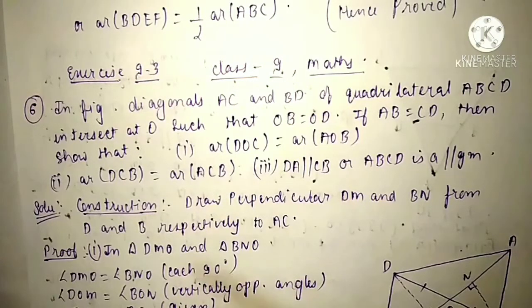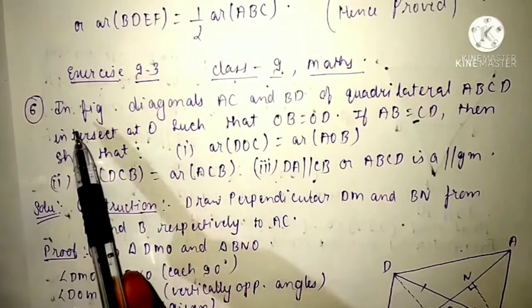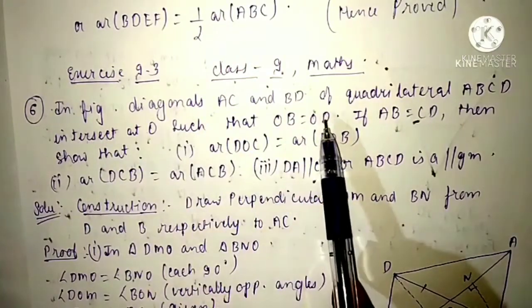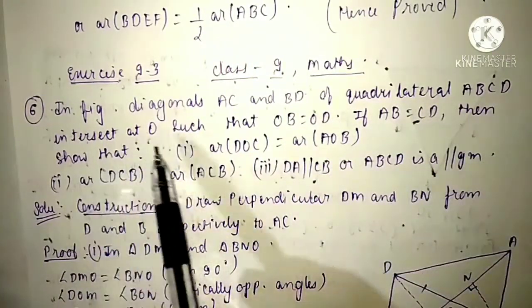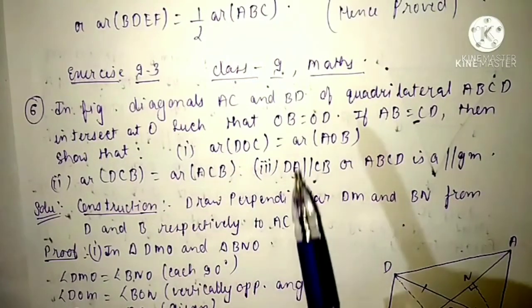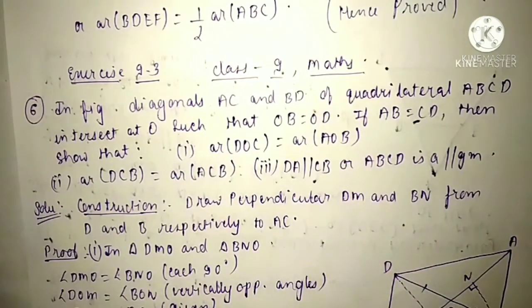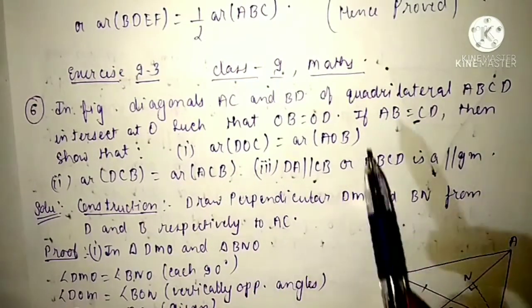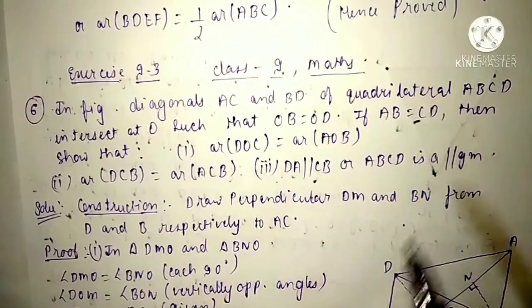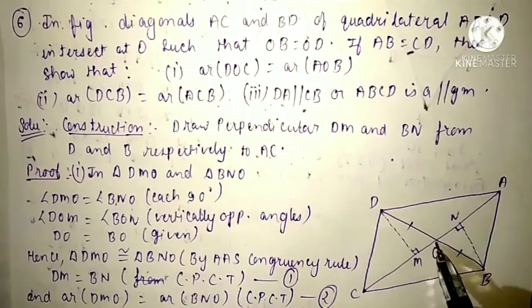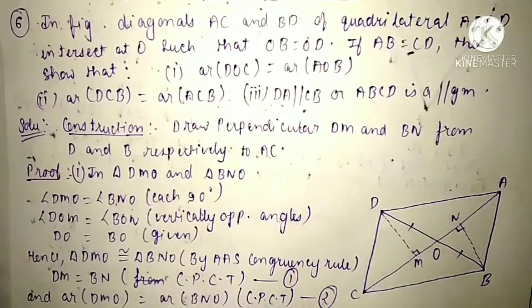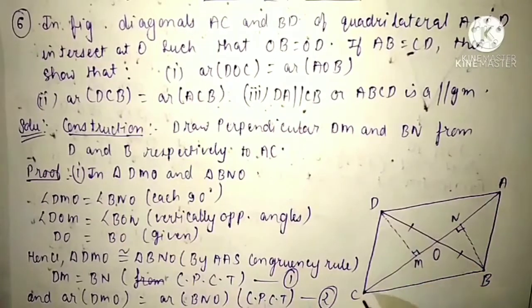Now see the sixth question. In the figure, diagonals AC and BD of quadrilateral ABCD intersect at O such that OB equals OD. If AB equals CD, then we need to show certain things. It is given that OB equals OD and AB equals CD.